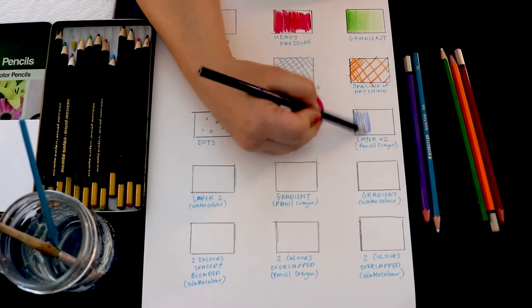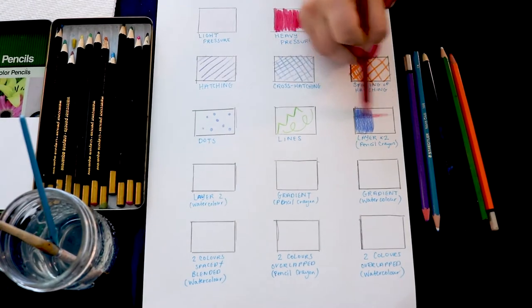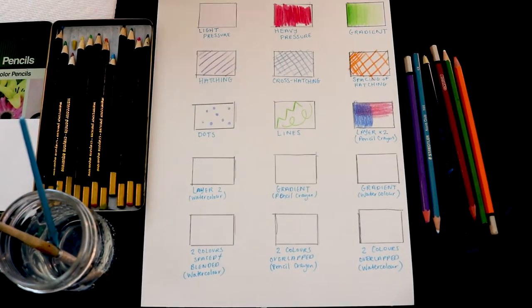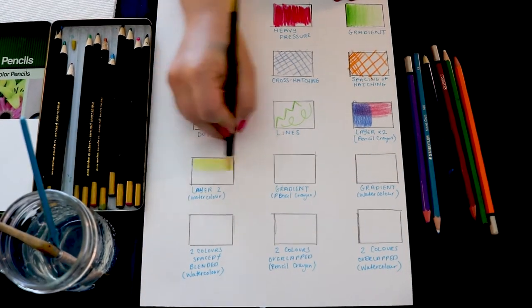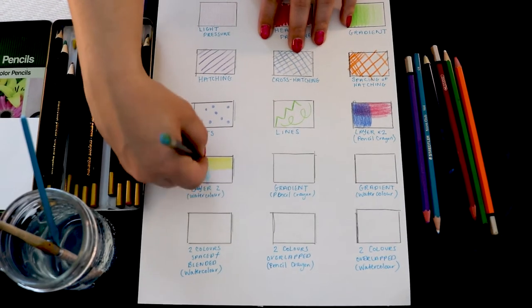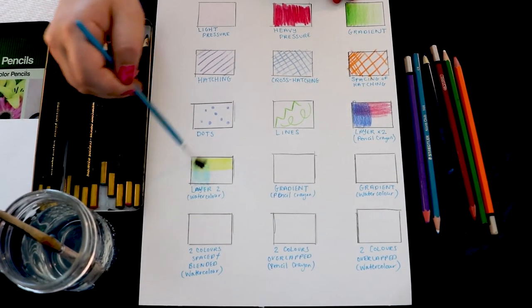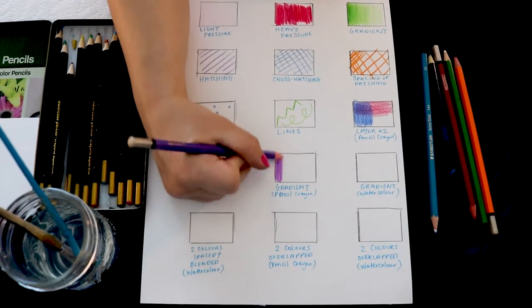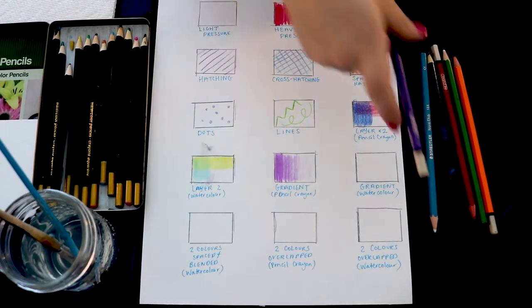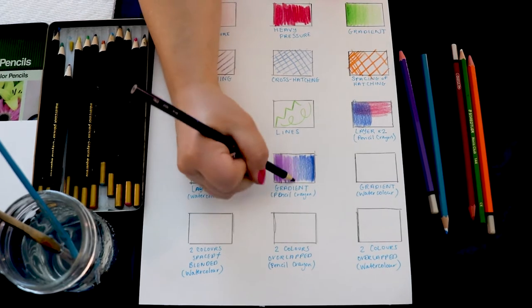You can also experiment with blending different colors together. Try layering two colors together and see what kinds of new colors are created. Try blending two colors with the gradient technique. You can also try blending watercolor pencils, leaving a gap between them, or try overlapping them too.